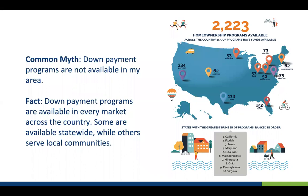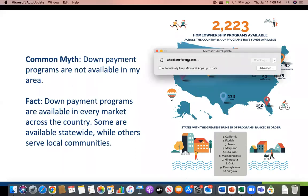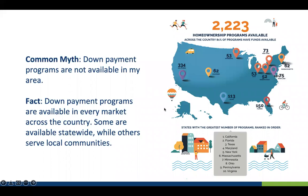We want everyone to know there is not a market, county, or city in the country not covered by some form of down payment assistance. Because every state has a state housing finance agency — in some states multiple agencies — their programs are offered statewide. Layer in all the county, city, nonprofit, and other homeownership assistance available, and not only is there not a market without help, there are markets with dozens of programs available.